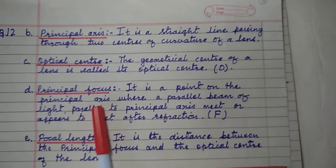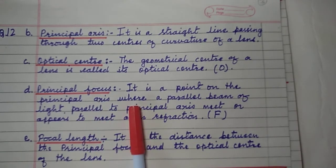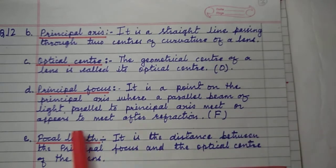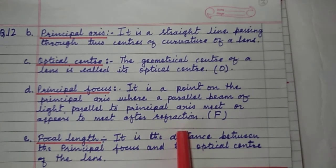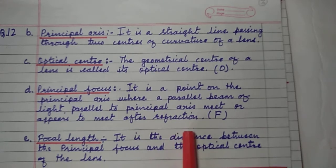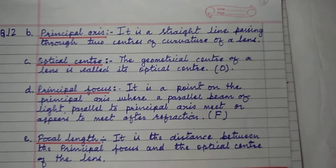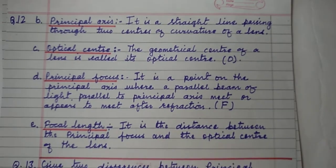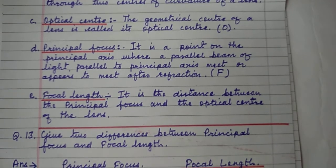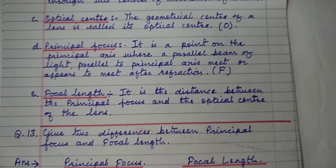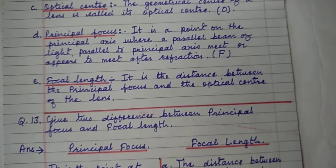Principal focus: it is a point on the principal axis where a parallel beam of light, parallel to the principal axis, meets or appears to meet after refraction. The rays of light after refraction meet at that point on the principal axis — that point is called the principal focus. Focal length: it is the distance between the principal focus and the optical center of the lens.